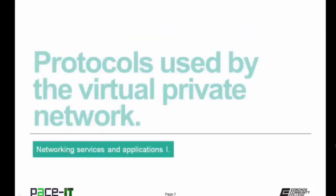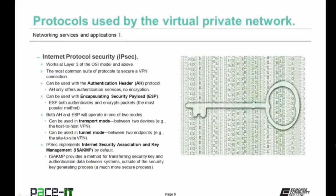It's time to discuss some protocols used by the virtual private network. The big protocol for VPNs is called Internet Protocol Security, IPsec — which isn't actually a single protocol, but a whole set of protocols. IPsec works at layer 3 of the OSI model or above. It's the most common suite of protocols used to secure a VPN connection. IPsec can be used with the authentication header protocol, AH, which only offers authentication services but no encryption. Or IPsec can be used with encapsulating security payload protocol, ESP, which both authenticates and encrypts the packets — it is the most popular method of securing a VPN connection.